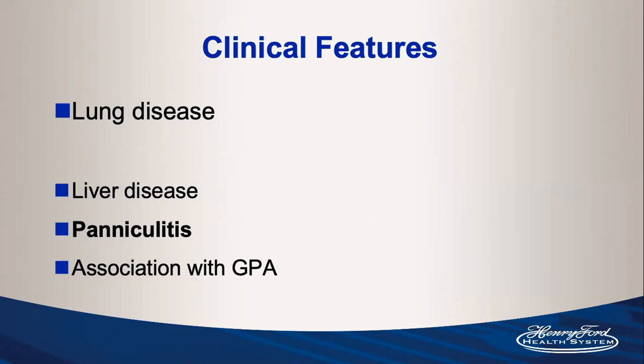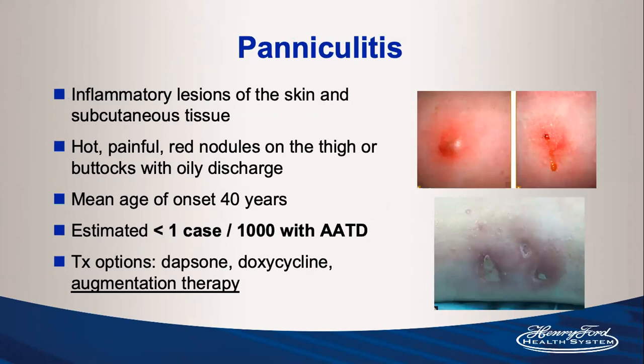Two other associations to keep in mind — predominantly for board questions — are panniculitis and an association with GPA. Panniculitis involves inflammatory lesions of the skin and subcutaneous tissue causing hot, painful, red nodules generally on the thigh or buttocks with an oily discharge. Mean age of onset is around 40, but it occurs in less than one case per thousand with alpha-1, so it's very rare even in the setting of alpha-1 antitrypsin disease.